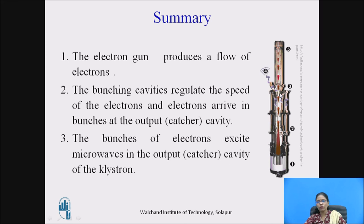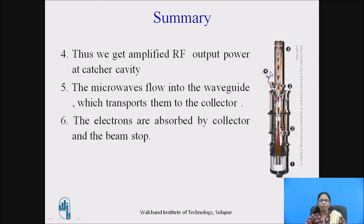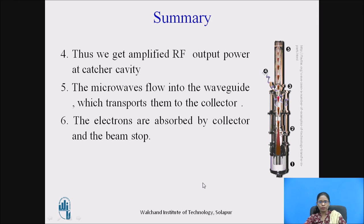The bunches of electrons excite oscillations, or excite microwave energy, in the output cavity of the Klystron. This small microwave energy is getting amplified at the catcher cavity and can be taken out from this end. Thus, we get an amplified RF output at the catcher cavity. The microwaves flow into the waveguide which transports them, and the electron beam is absorbed by the collector.